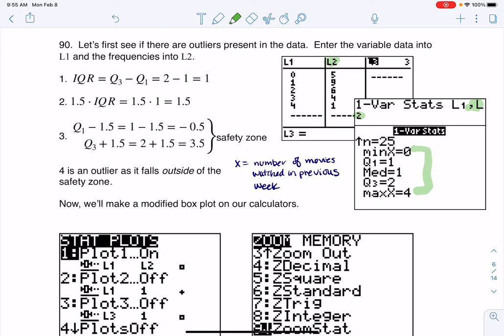Before I sketch the modified box plot, let me check for outliers using the three-step process to create a safety zone. First, I calculate IQR = Q3 - Q1 = 2 - 1 = 1. Second, multiply by 1.5: 1 × 1.5 = 1.5. Third, subtract from Q1 and add to Q3: Q1 - 1.5 = 1 - 1.5 = -0.5, and Q3 + 1.5 = 2 + 1.5 = 3.5. The safety zone is -0.5 to 3.5.